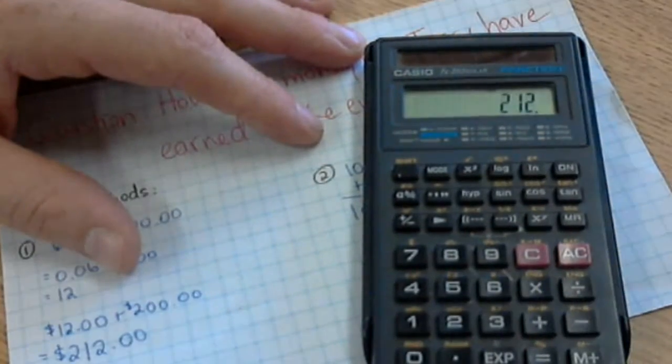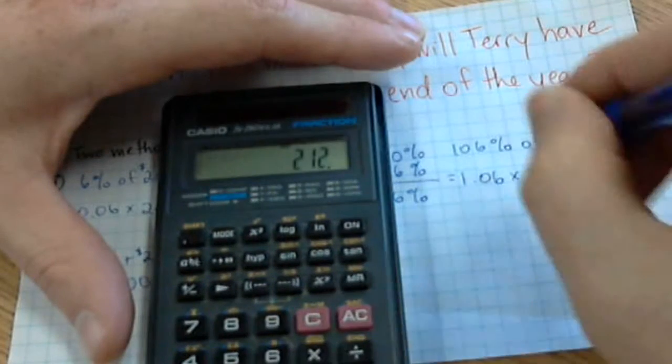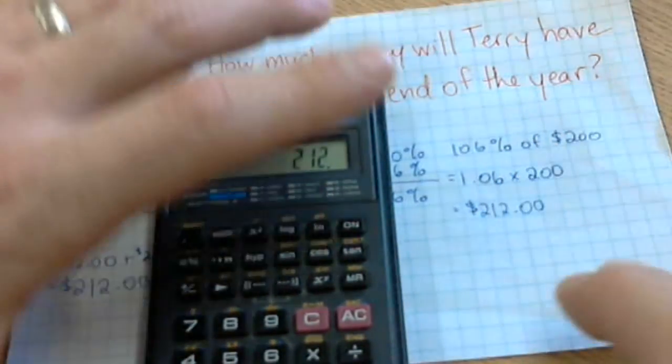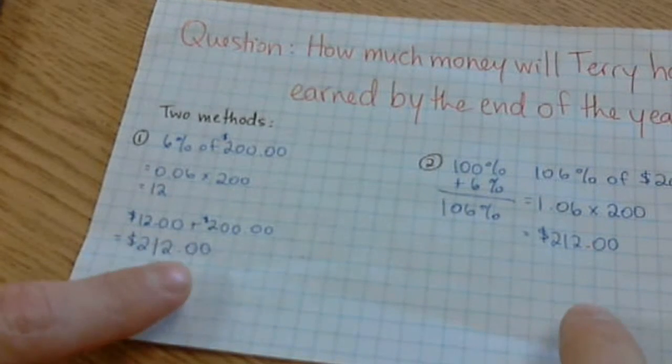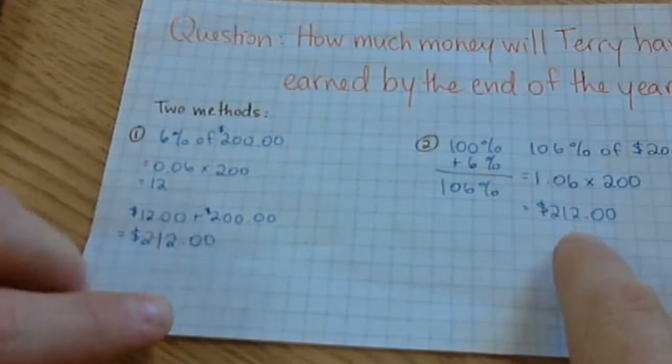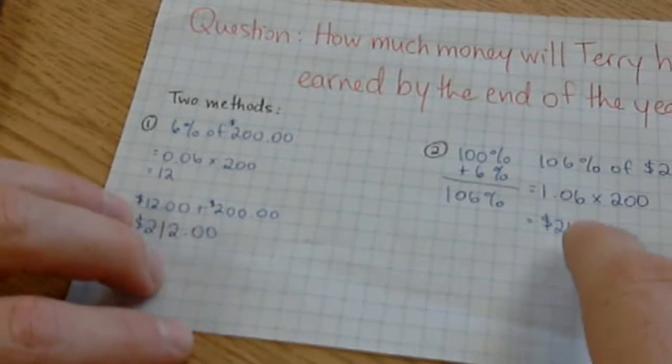So I have 1.06 times 200, which automatically tells me that she's going to earn $212. I'm able to simplify the process from this to this.